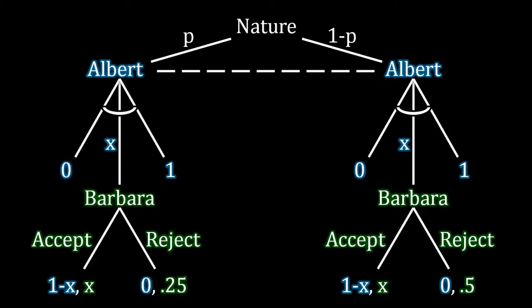This is a very plausible thing to think about. There are many cases where it makes sense for Albert to know very closely what Barbara's outside option is, but on the other hand there are also plenty of situations that more resemble this sort of setup. So this is a very important situation to consider, and that's why we're going to be spending quite a few lectures actually analyzing this particular situation.